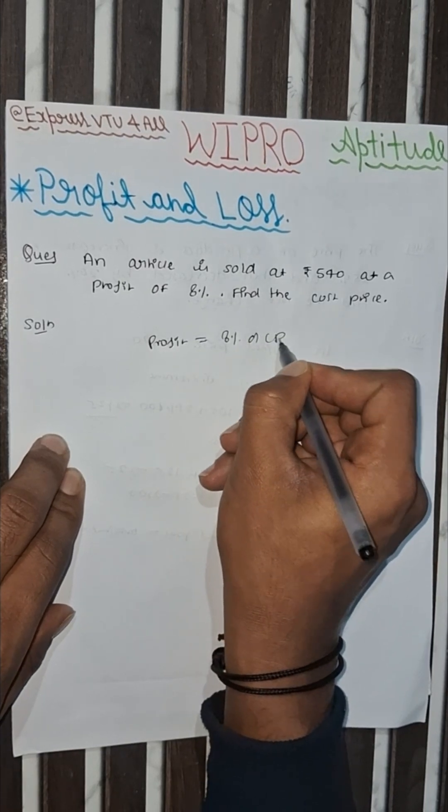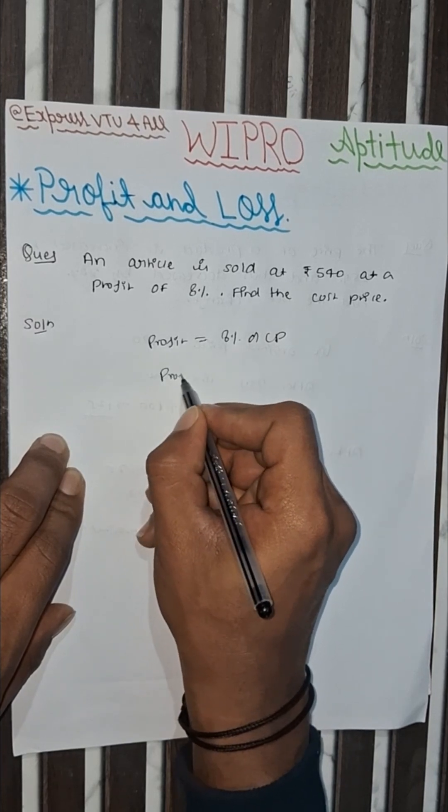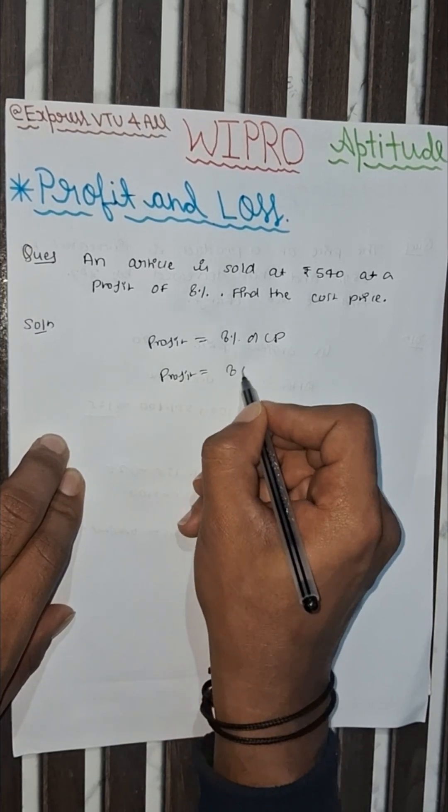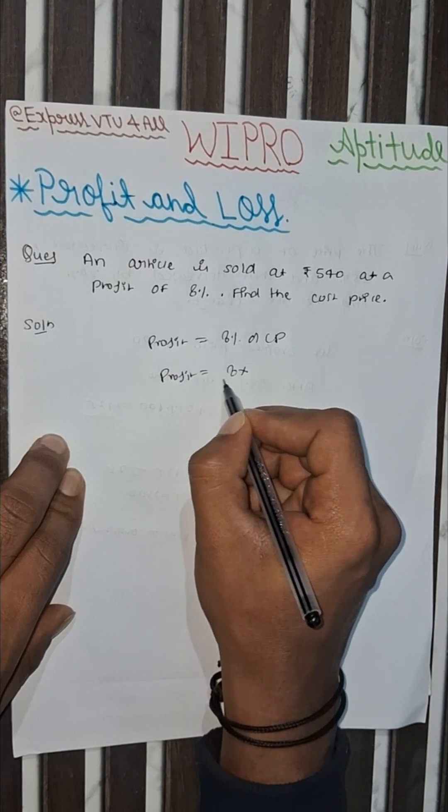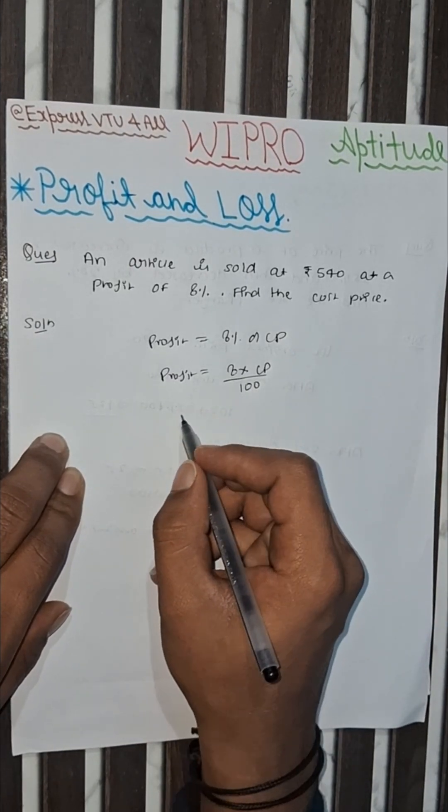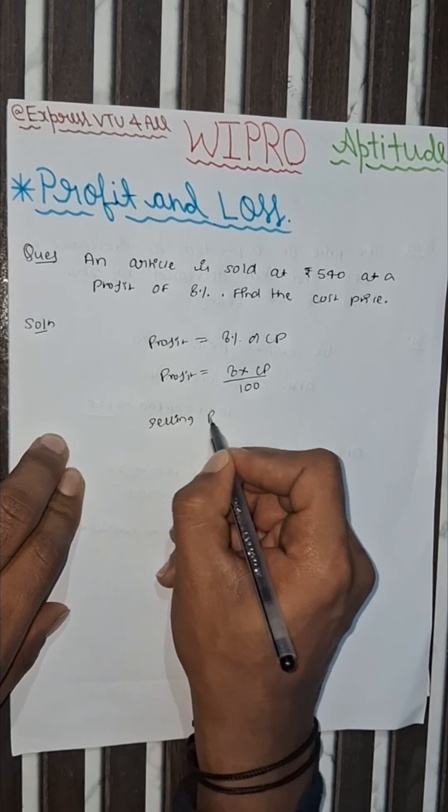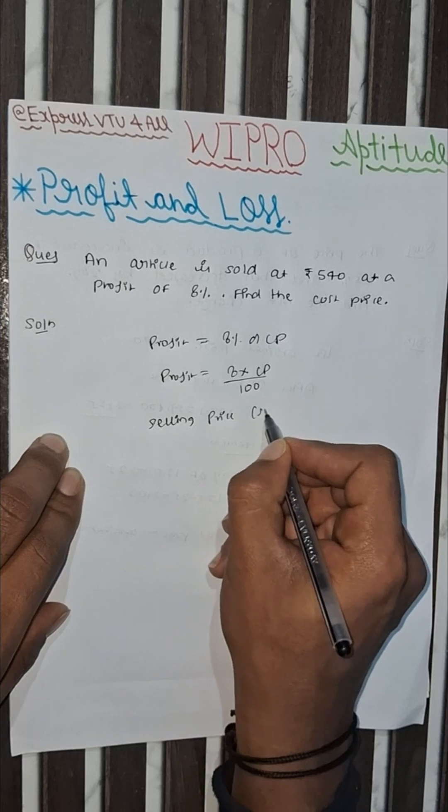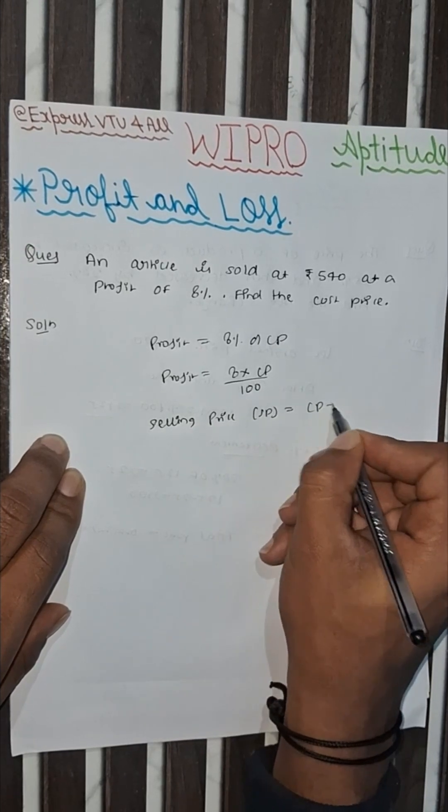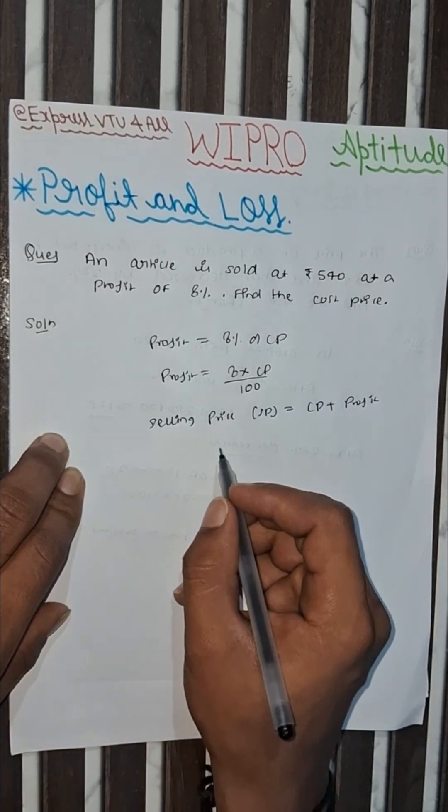Profit equals 8 into CP by 100. What is the formula of selling price? Selling price is equal to cost price plus profit.